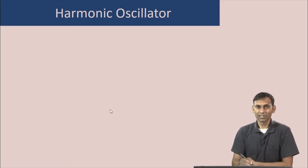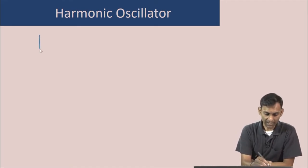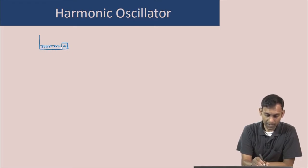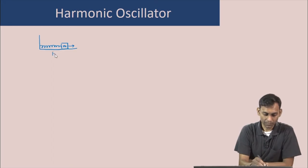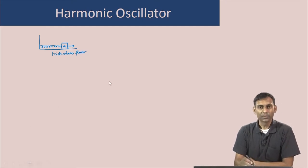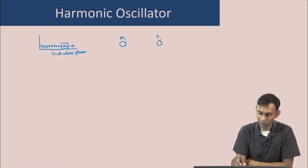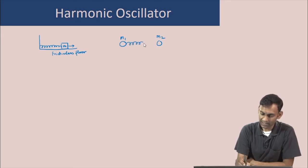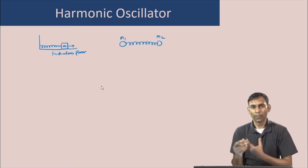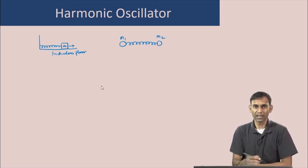The picture of a single mass moving in a harmonic potential looks like this: there is a mass m connected by a spring to a rigid wall and this moves on a frictionless floor. A diatomic molecule does not quite look like this. A diatomic molecule looks like two masses m1 and m2 connected by a spring, and these two particles move according to the force due to the spring, with no other forces acting on them.